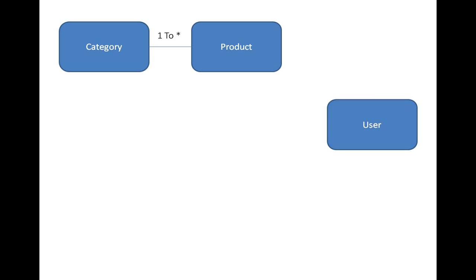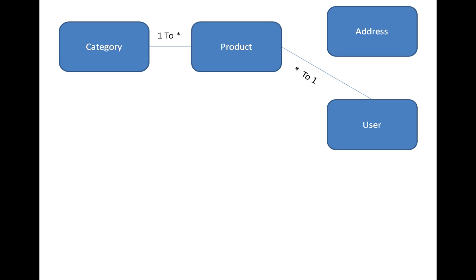Moving further, there will be a user entity. I have decided on three types of users: supplier, admin, and customer. A customer can buy products, a supplier can sell products, and an admin can do administrative tasks like adding, activating, or deactivating products and categories. A supplier can supply more than one product, so it will have a one-to-many relationship with product. A user can also have more than one address, giving a one-to-many relationship between user and address.